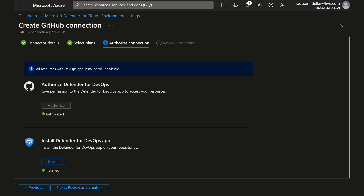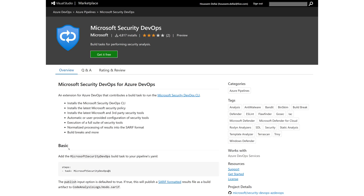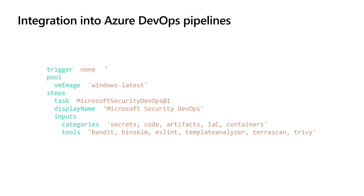The second part of configuration is done from within your DevOps tool. For Azure DevOps, go to your organization and install the extension called Microsoft Security DevOps — it's free. Then go to an existing pipeline or create a new one, configure the triggers, select the VM image as Windows Latest, and add the task Microsoft Security DevOps. Give it a display name and specify the categories for input — it will scan for secrets, source code, artifacts, infrastructure as code templates, and Docker containers if detected.